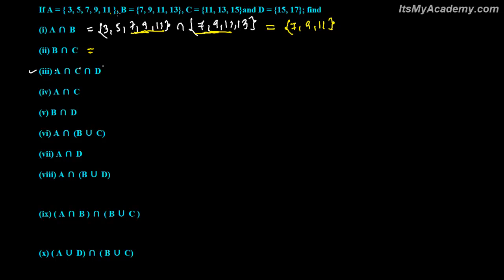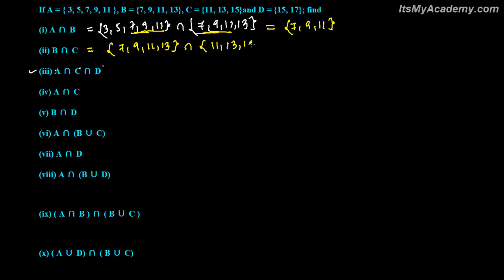Now B intersection C means the common between B and C. In B we have 7, 9, 11, 13. In C we have 11, 13, 15. So the numbers common between both are 11 and 13. These are the two numbers common between both, so our answer is {11, 13}.